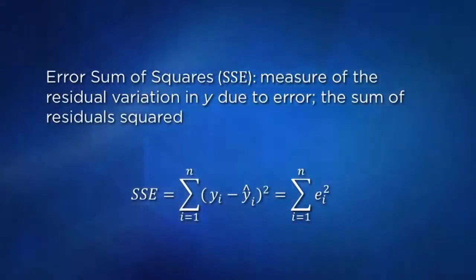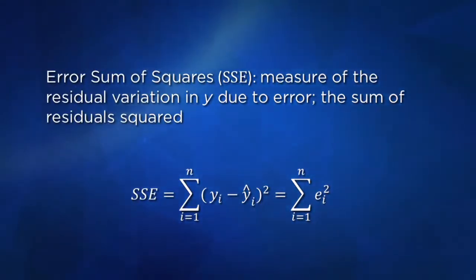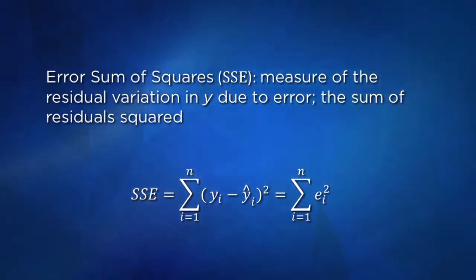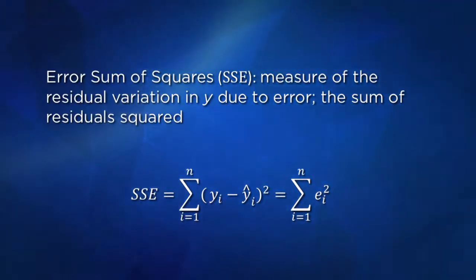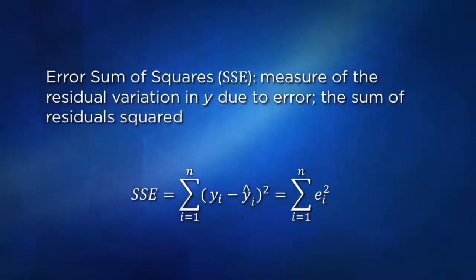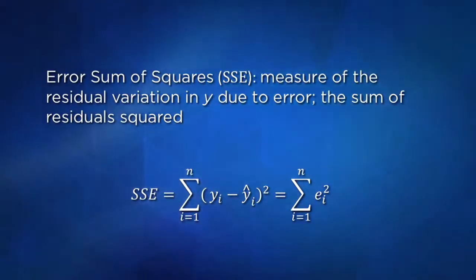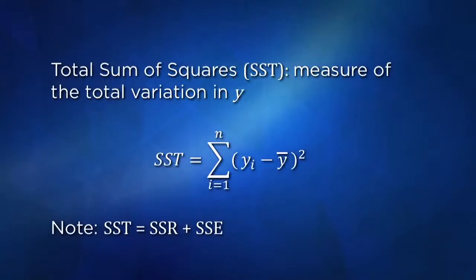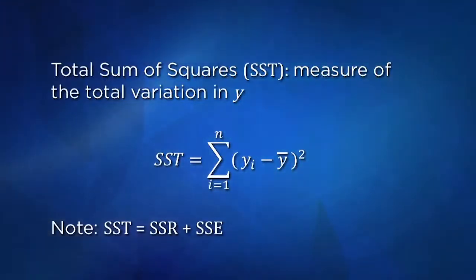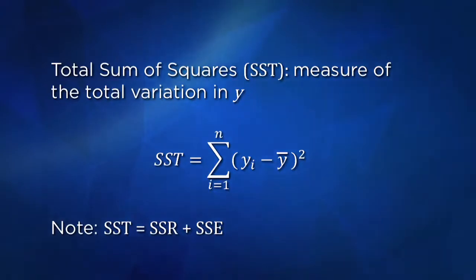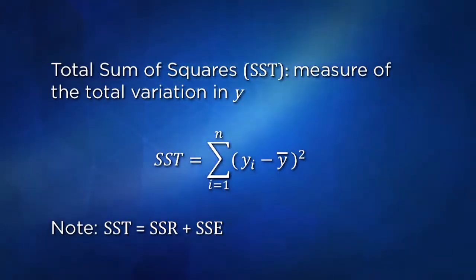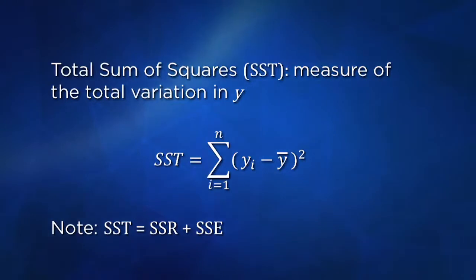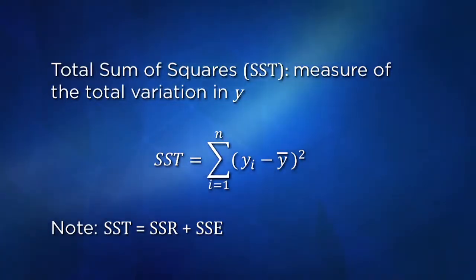Next is the error sum of squares, SSE — this measures the residual variation in y due to error, which is also our sum of squared residuals: SSE = Σᵢ(yᵢ − ŷᵢ)² = Σeᵢ². Lastly, the total sum of squares, SST, measures the total variation in y: SST = Σᵢ(yᵢ − ȳ)². We can show that SST = SSR + SSE.